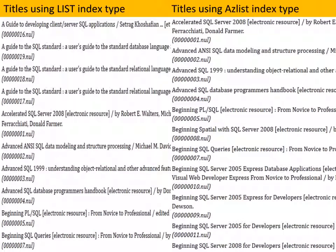Here are the two indexes side by side. The one on the left is the list one — you can see it starts with 'A guide.' The one on the right is the AZ list index type. The prefixes are not there, so the items are sorted in a more natural-to-humans kind of order. You don't need AZ list for just about anything except where you really want that ALA sorting order — typically with physical files — but it's a handy index type to know about.